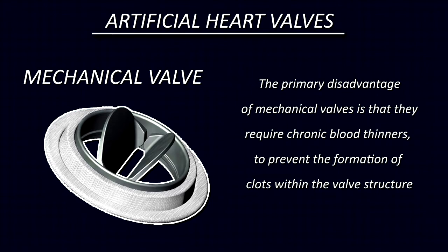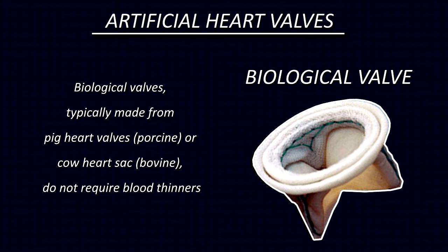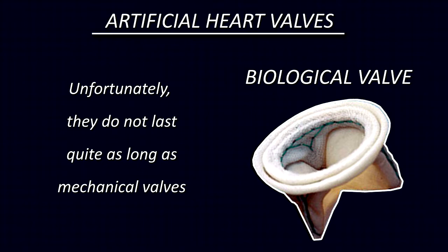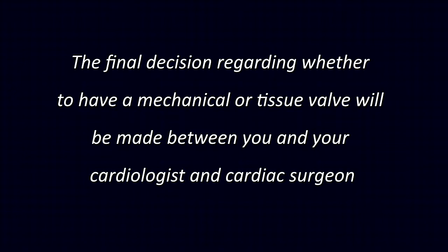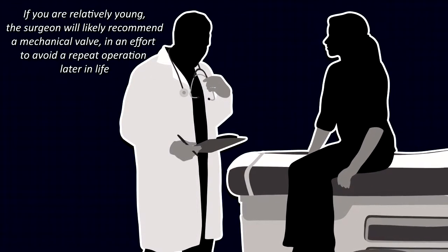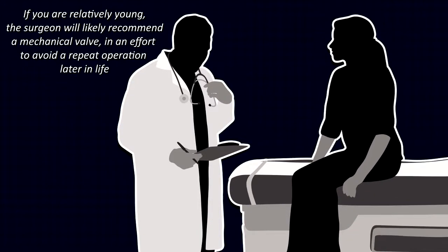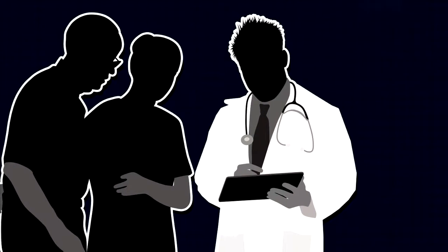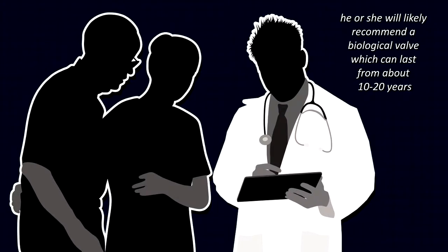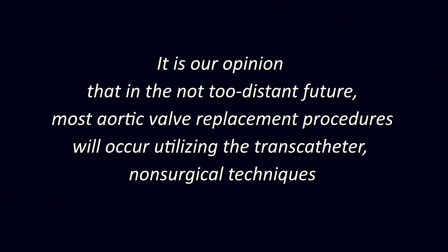The primary disadvantage of mechanical valves is that they require chronic blood thinners such as warfarin to prevent clot formation. Biological valves, typically made from pig heart valves (porcine) or cow heart sac (bovine), do not require blood thinners, but do not last quite as long as mechanical valves. If you are relatively young, the surgeon will likely recommend a mechanical valve to avoid a repeat operation later in life. If you're older or cannot take blood thinners long-term, he or she will likely recommend a biological valve lasting about 10 to 20 years. It is the opinion of this author that in the not-too-distant future, most aortic valve replacement procedures will occur using transcatheter non-surgical techniques.